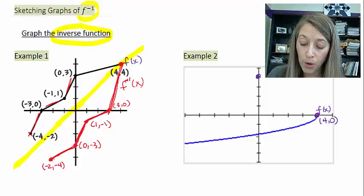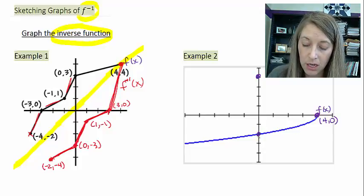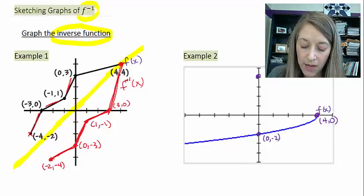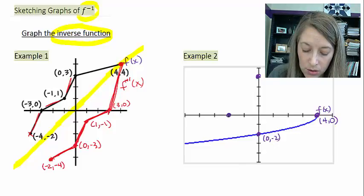If I pick another point here—intercepts are always easy to go by—I see that this is (0, -2). So my reflection would be (-2, 0).